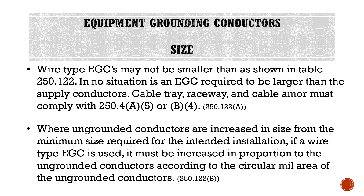Where ungrounded conductors are increased in size from the minimum required — whether due to voltage drop, more than three current-carrying conductors in the same raceway, or ambient temperature — if a wire-type equipment grounding conductor is used, it must be increased in proportion to the ungrounded conductors according to the circular mil area of the ungrounded conductors. This is something I see overlooked a lot in the field, so I want to make sure you're aware of it, even though it's beyond the scope of the exam.